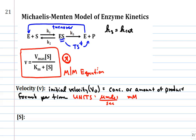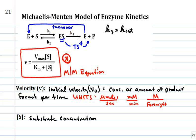Velocity units could be millimolar per minute, micromoles per second, or even molar per fortnight — amount or concentration per unit time. [S] in brackets means concentration, so this is substrate concentration, and the units are some type of concentration unit: molar, millimolar, nanomolar. In enzyme biochemistry we typically use molar or some metric derivative like millimolar, nanomolar, or picomolar.